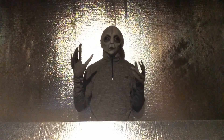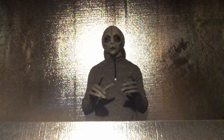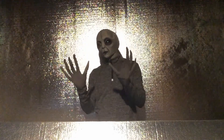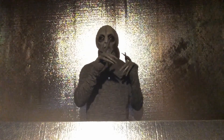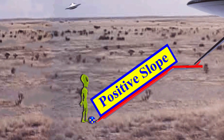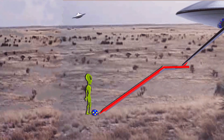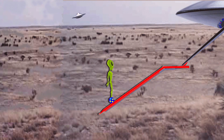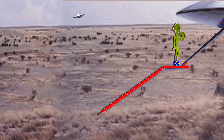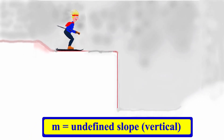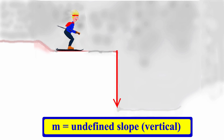Before moving on in the syllabus, it is important to remember the four types of slopes. To recap: type one is the positive slope — it moves to a positive high point as you read the line from left to right. When an alien travels the slope rather than using a teleportation machine, he moves up the line from left to right. The second type is the undefined slope, a vertical line that produces a skiing experience that is undefined.